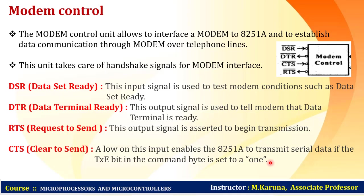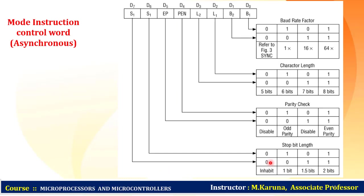The 8251A is initialized using three words: mode word, command word, and status word. Programming involves first sending a reset, then sending a mode word to the control word register, then sending a command word to the same address. The CPU can check the readiness of 8251A for data transfer by reading the status register.